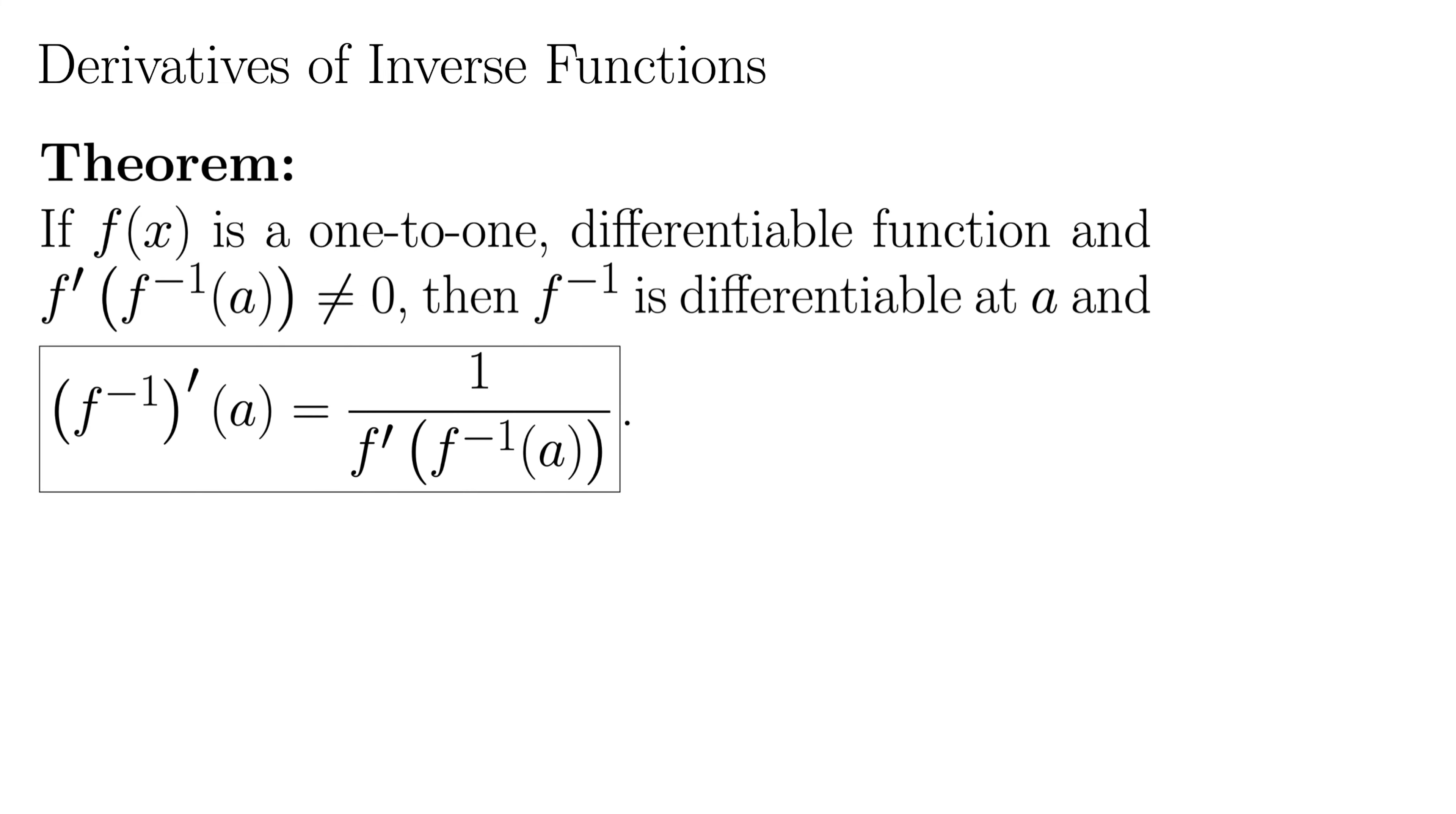There's a theorem for that, and using the theorem is a lot easier than it would appear from looking at the theorem. So here's the theorem. The theorem says that if f(x) is a one-to-one differentiable function, and f'(f⁻¹(a)) does not equal 0, then f⁻¹ is differentiable at a, and that derivative, f⁻¹'(a), equals 1 over f'(f⁻¹(a)).